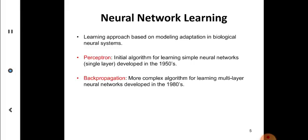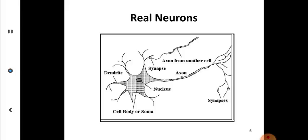What is perceptron? It's the initial algorithm, a very initial algorithm which came up in the 1950s for learning simple neural networks, single layer. Back propagation is a more complex algorithm for learning multi-layer neural networks developed in the 1980s.